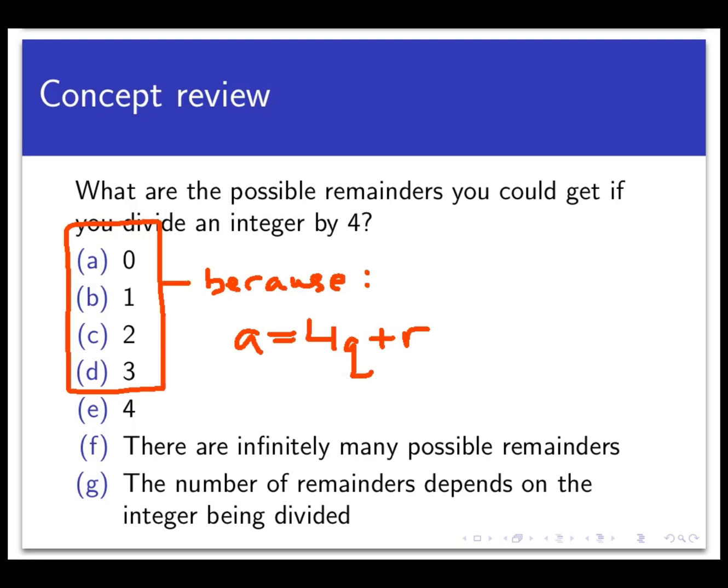Remember, 4 is the divisor, or the B, in the algorithm this time. And importantly, these numbers have to be such that 0 is less than or equal to R is less than 4. That's a strict inequality there on the right end. R is less than 4. So we cannot just get any remainder we want. The remainder must be an integer that is greater than or equal to 0 and less than 4. And the only four integers that satisfy that condition are 0, 1, 2, and 3.